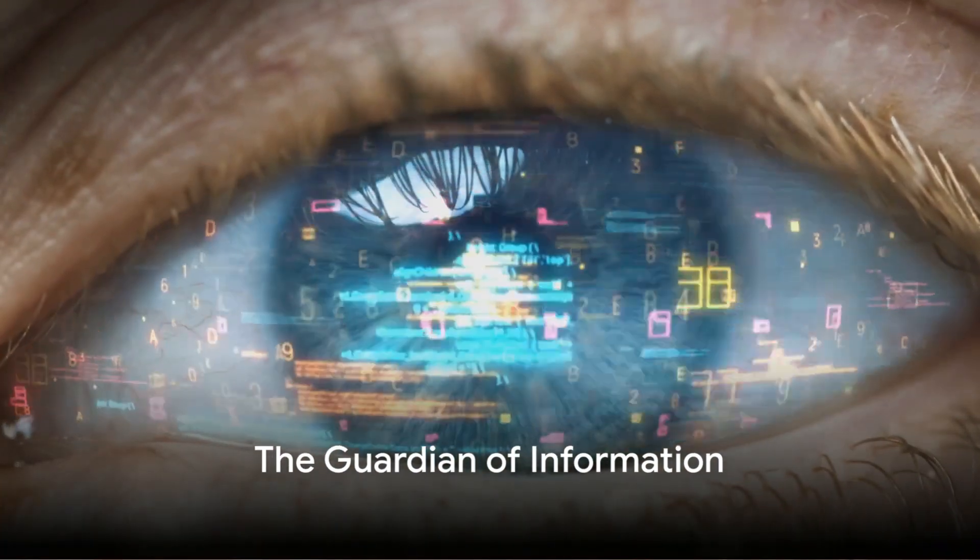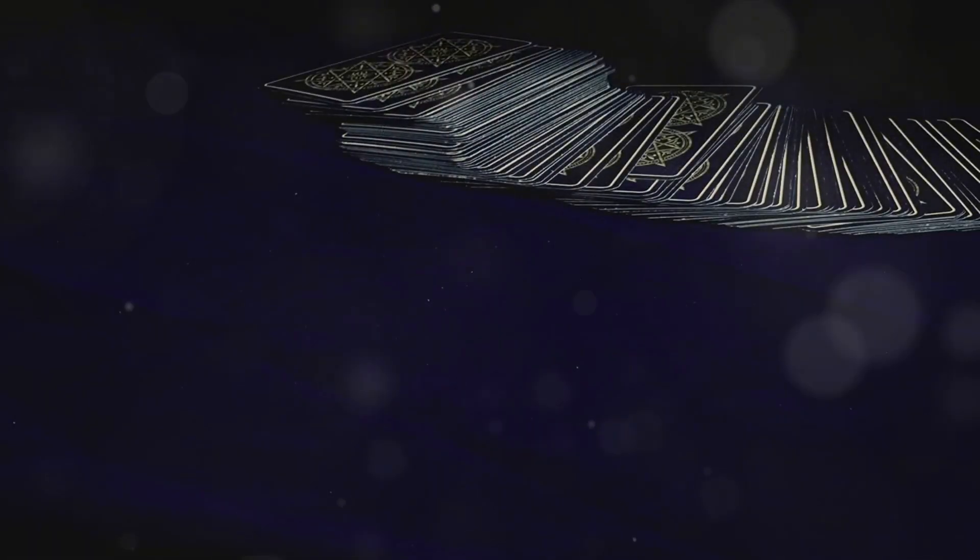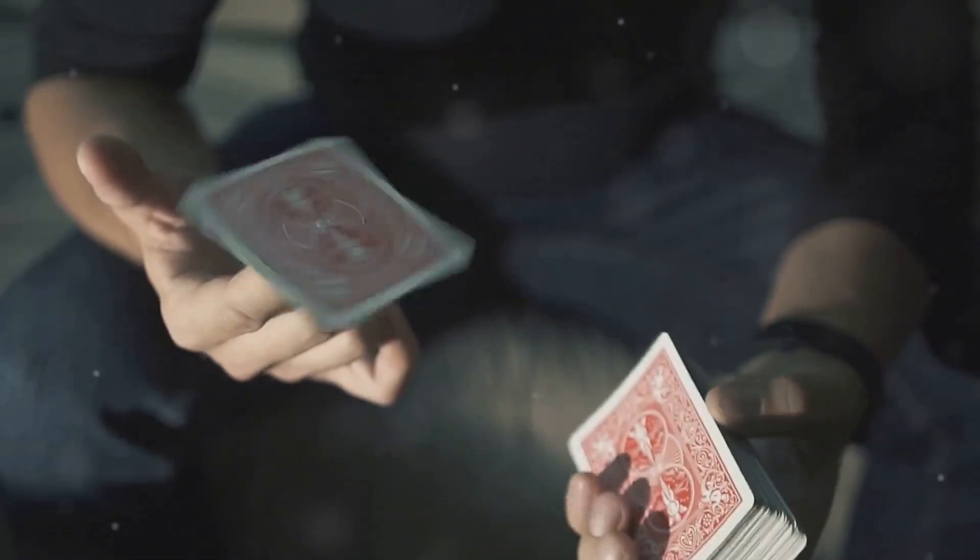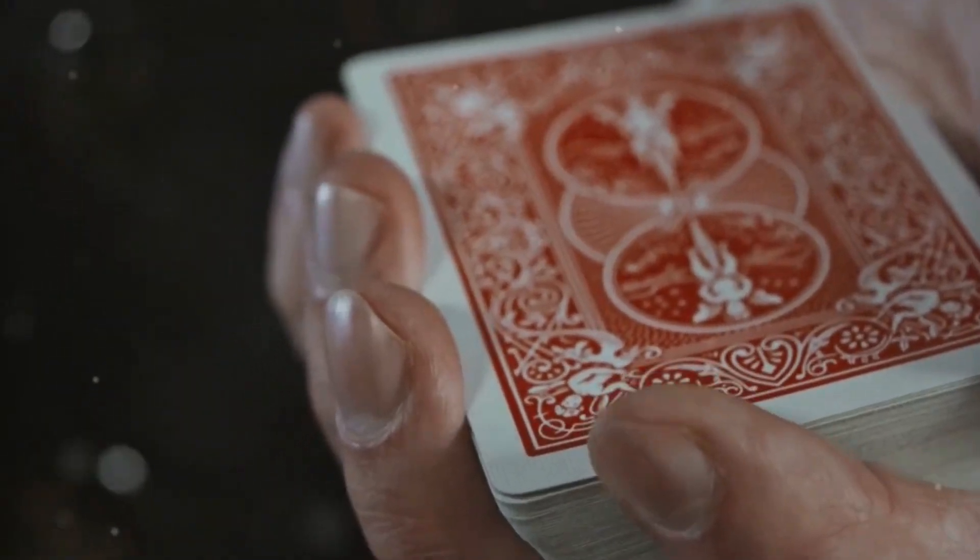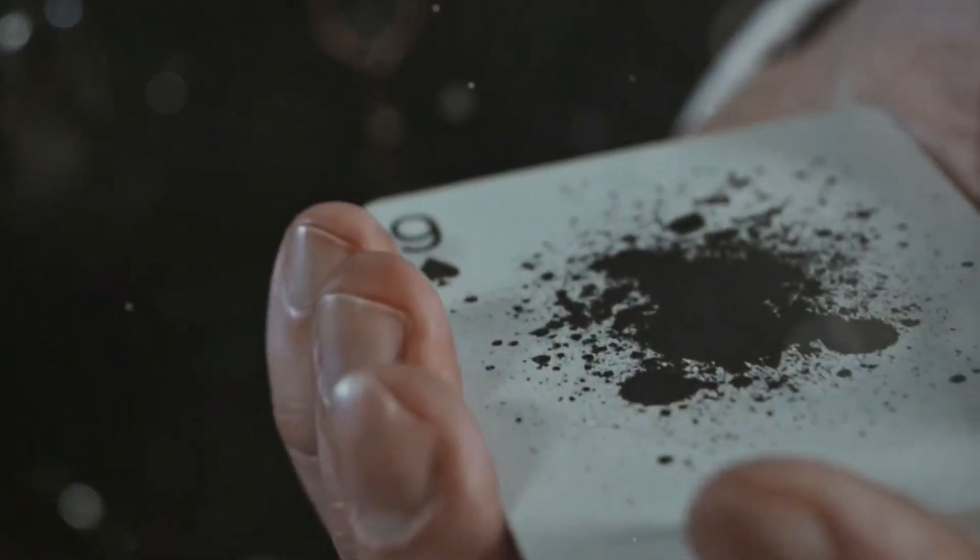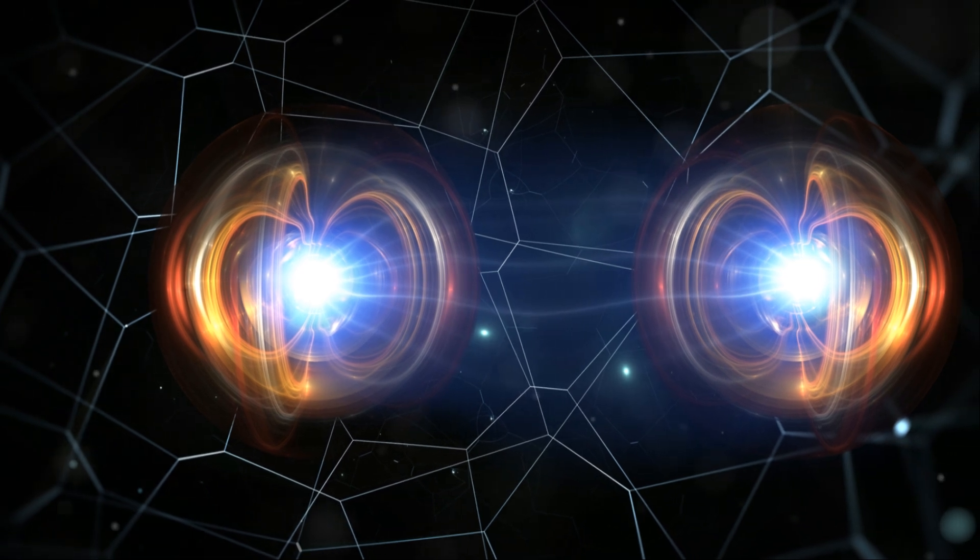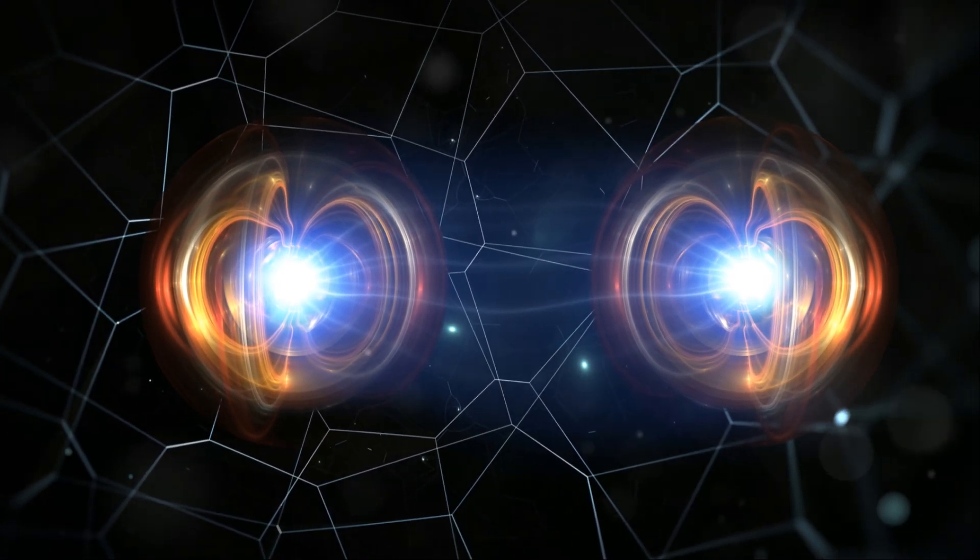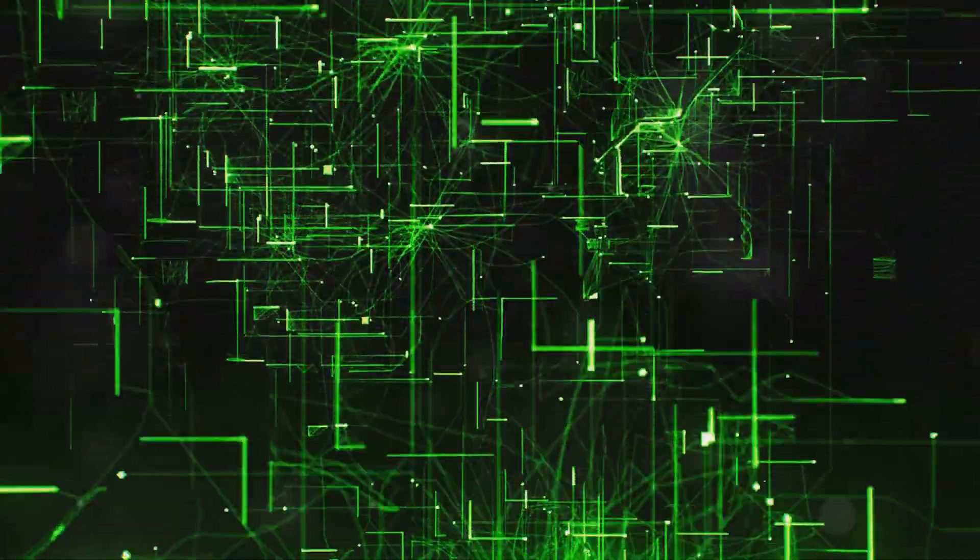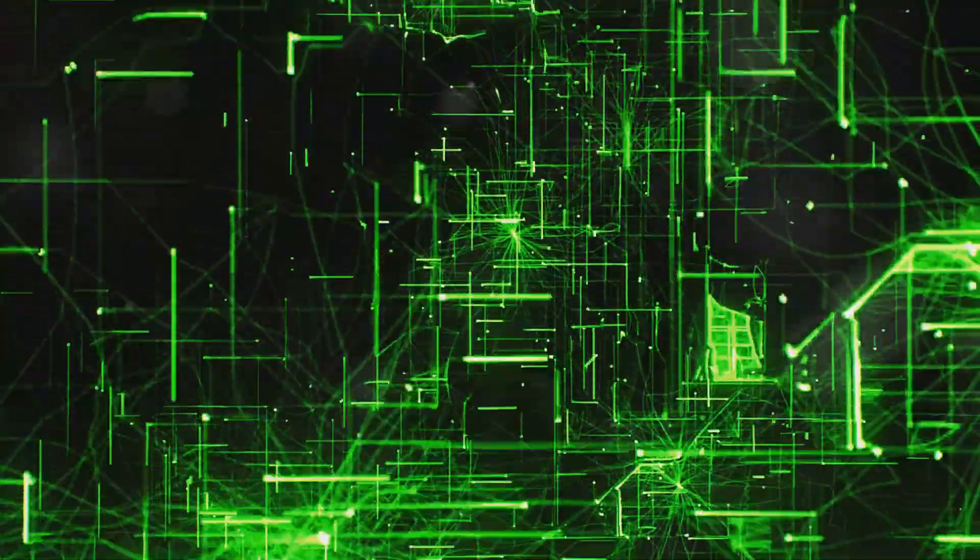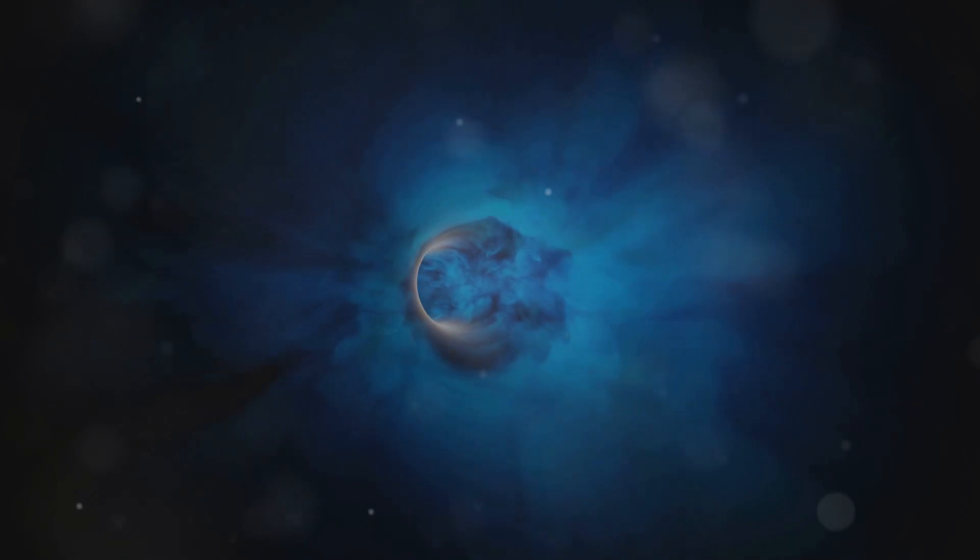To understand why information is so crucial in quantum mechanics, think of it like this. Imagine you have a perfectly shuffled deck of cards. Each card represents a unique piece of quantum information. Now you can shuffle the deck, deal the cards, even burn a few for dramatic effect. But, no matter what you do, the information contained within those cards, the specific suits and numbers, remains intact. Similarly, in the quantum world, information is like the unchanging essence of a particle. It might change forms, get entangled with other particles, or even become smeared out across space-time, but it can never be truly destroyed.